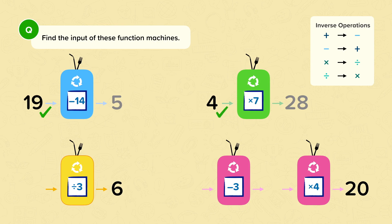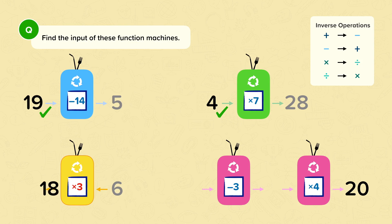Something divided by 3 is 6. If the 6 goes in backwards, we need to use the inverse operation of dividing by 3, which is multiplying by 3. 6 multiplied by 3 is 18. So to check our answer, 18 divided by 3 is 6.